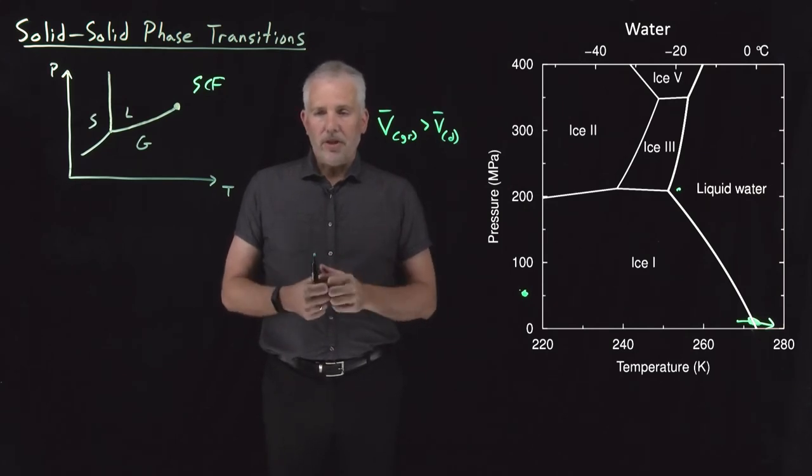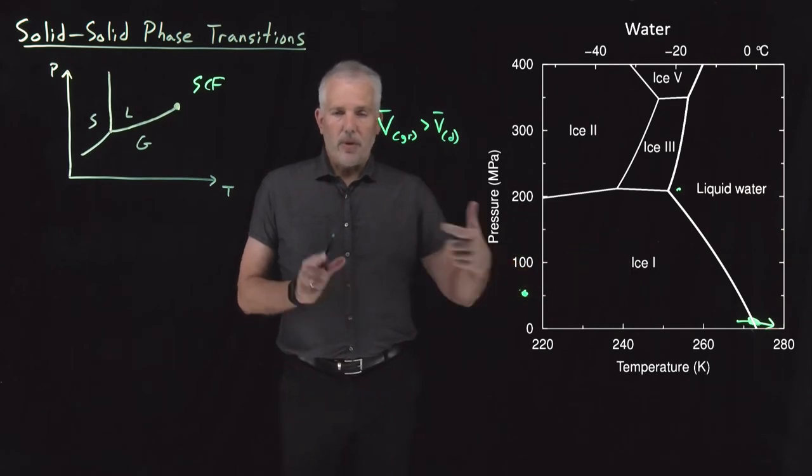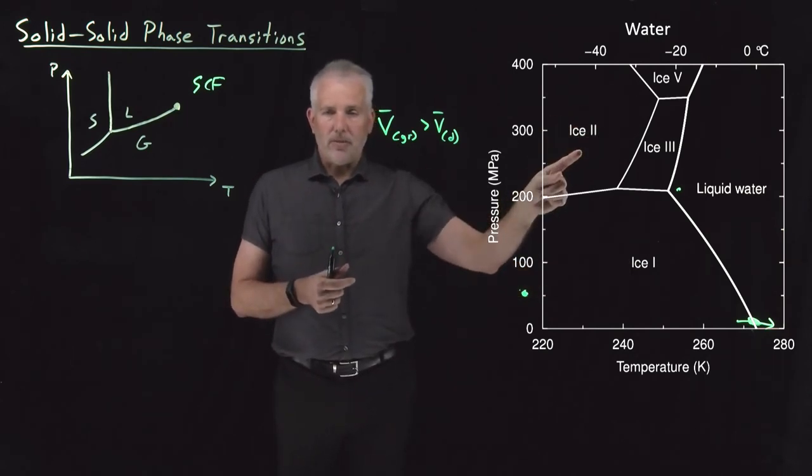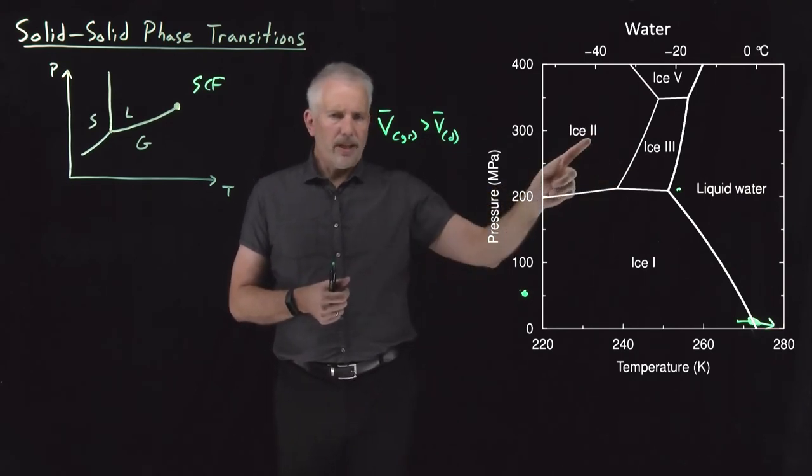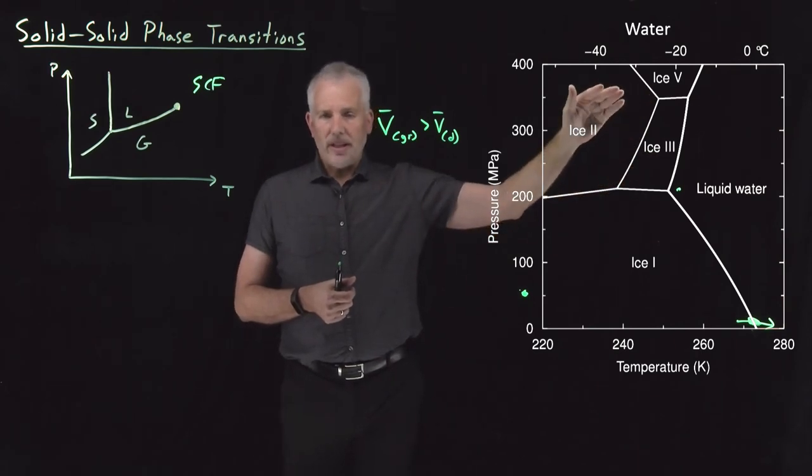Just like diamond is a different arrangement of carbon atoms than graphite is, ice one has an arrangement with the hydrogen bonds pointing in a direction that's different than the arrangement of those hydrogen bonds in ice two or ice three or ice five. And you might guess by the fact that there's a two and a three and a five, elsewhere on this diagram at higher pressures, there's also an ice four.